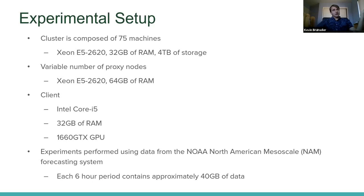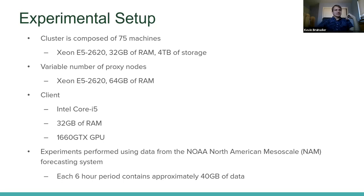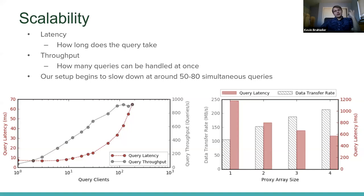Our experimental setup uses a cluster of 75 commodity machines — the kind found in typical cloud computing environments, but with a few extra terabytes of storage. Proxy nodes are more powerful and varied by experiment (never more than five). The client used for evaluation is the laptop used for this presentation, with a mid-range GPU and decent RAM. Experiments were performed on the NAM forecasting system dataset, with each six-hour period estimated at approximately 40 gigabytes of data.